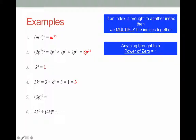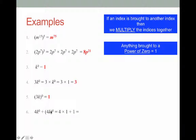Question five is a little different: notice there is a bracket here. That bracket means everything inside is being brought to a power of 0, and everything to the power of 0 is 1. Question six has 4k all to the power of 0, which equals 1, and then we add one more, giving us 4 times 1, which is 4, plus 1 more, making the answer 5.